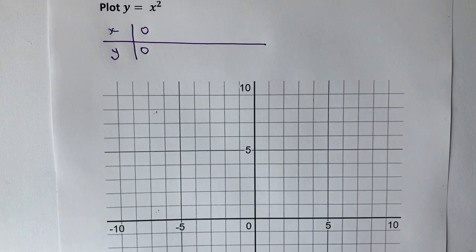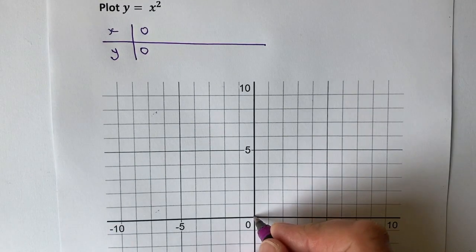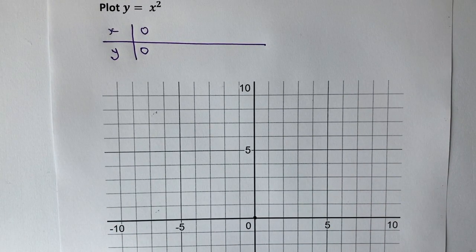Therefore, the value of y in this case will also be 0. So that's great. So if I go to my actual grid, you can see here I've got 0, 0, which is the origin.